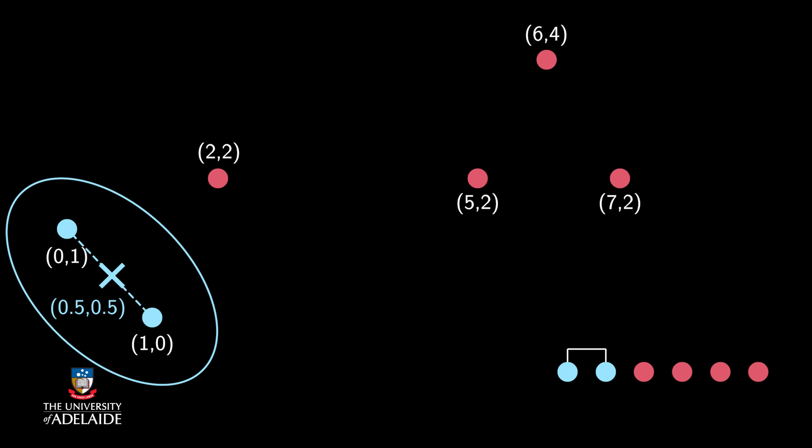The new cluster has a different centroid, which is the average of the points within it. So its centroid is (0.5, 0.5). Now I have five clusters.